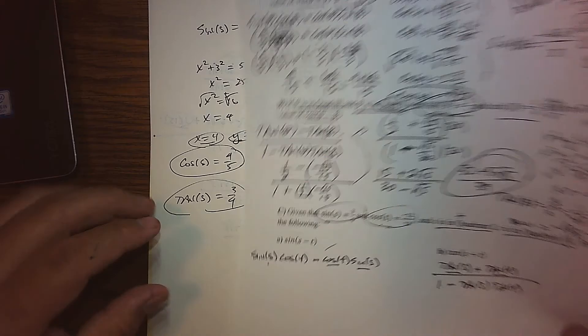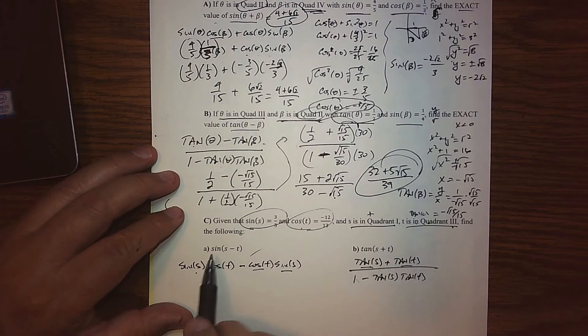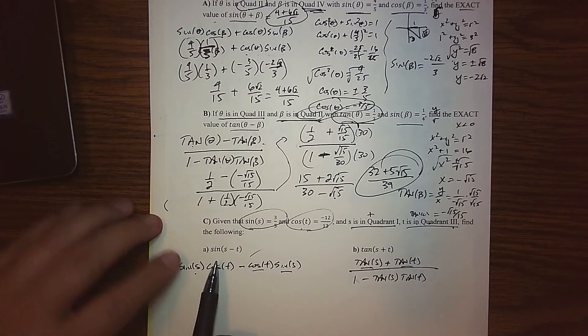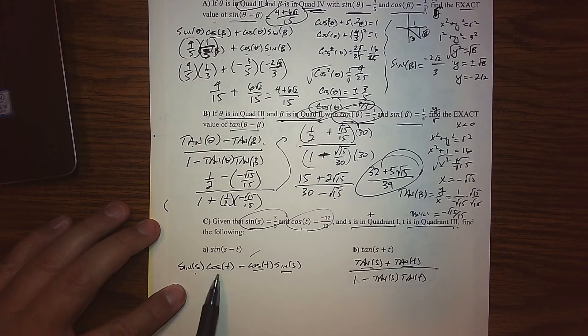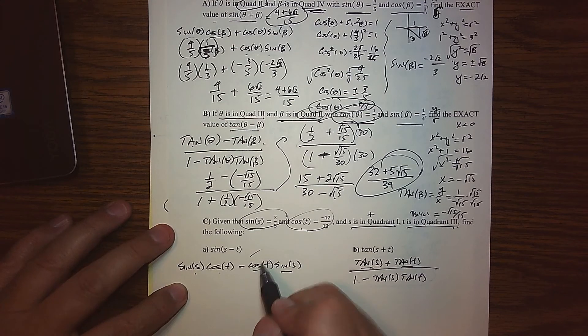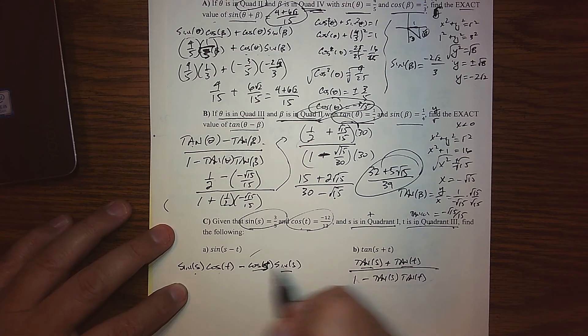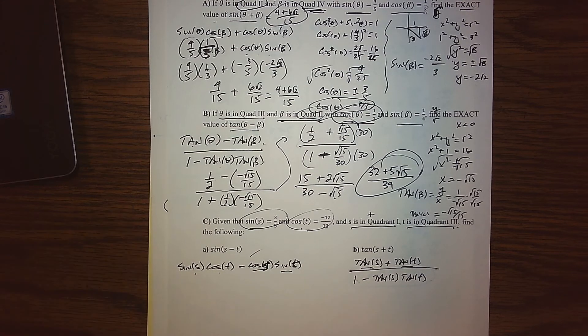So armed with this knowledge, I think we can go fix this. And let me fix this real quick. Let me make sure I use the identity right. So sine s, cosine t, and then, there's the problem, cosine s, sine of t.